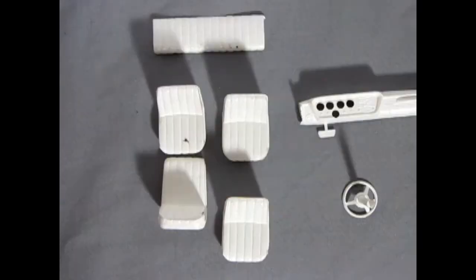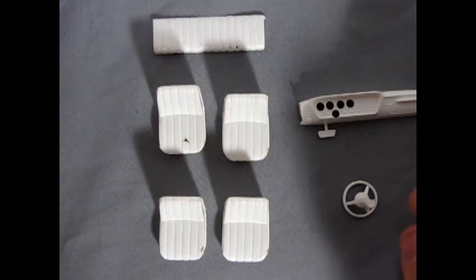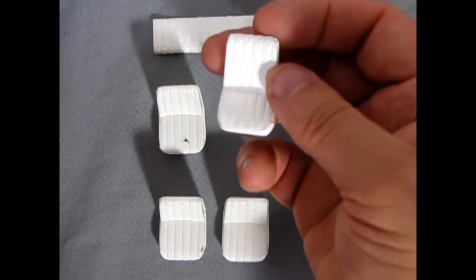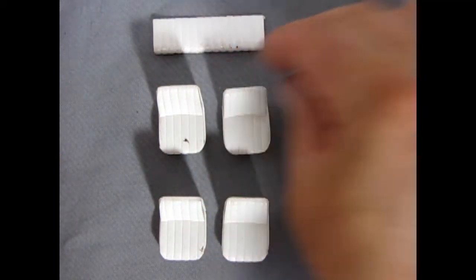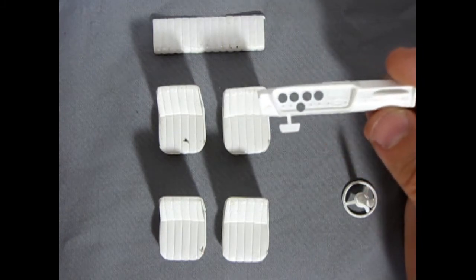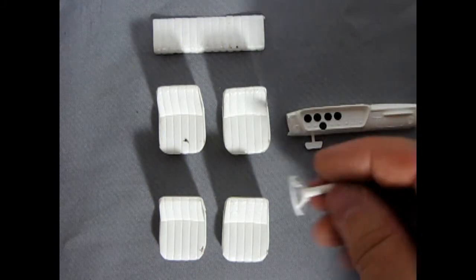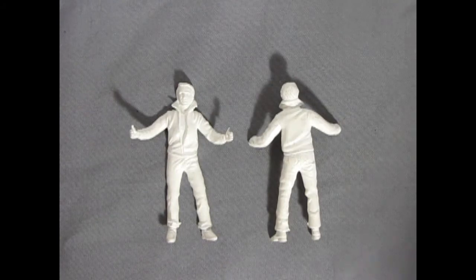Here we have our bucket seats as well as our dashboard and steering wheel. Again, you can see the nice pleating on these seats—looks very well done, one piece mold but no mold marks on the back. And then look at our dashboard with those holes for our gauges all to fit in—that's some really nicely detailed stuff, as well as our steering wheel looking quite accurate to the real car.